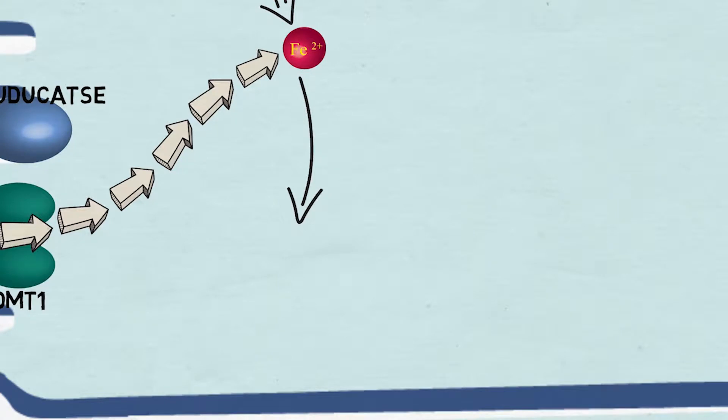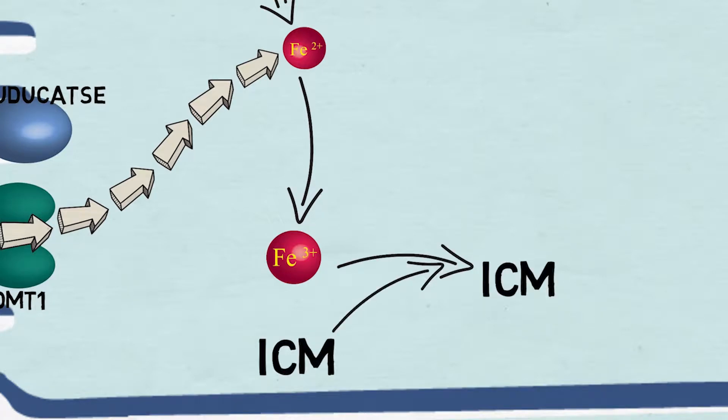Once inside the enterocyte, Fe2+ is converted to Fe3+ ion, then it binds to an intracellular carrier molecule which helps to transport it inside the cell.